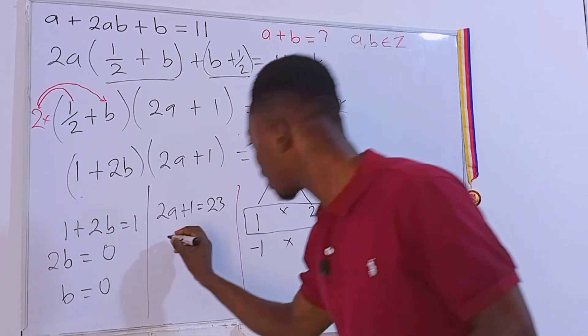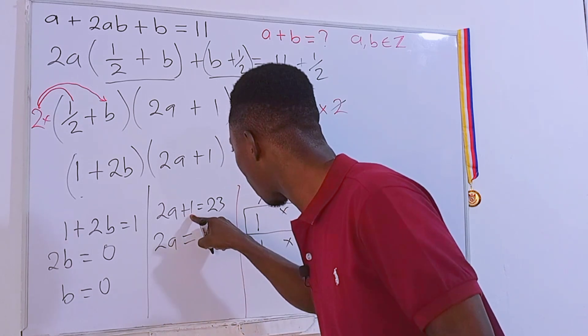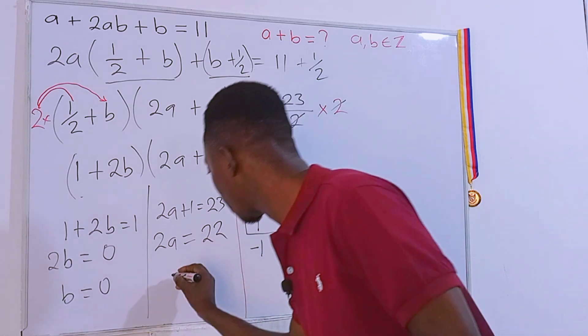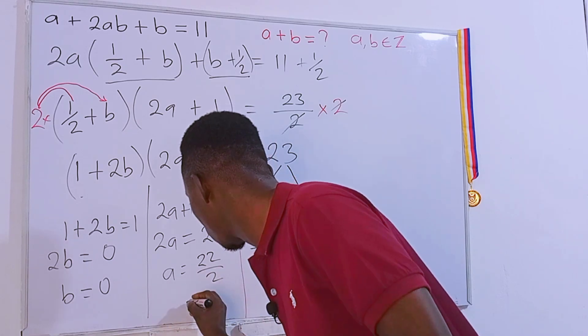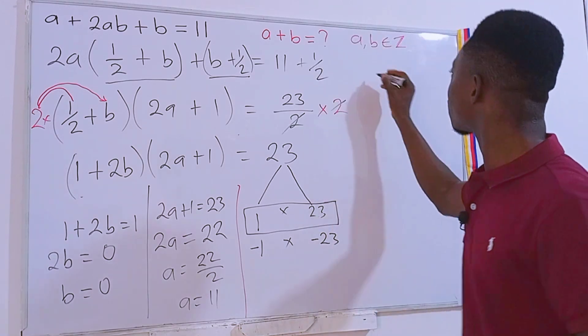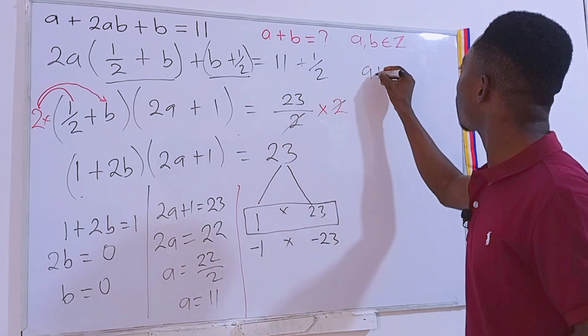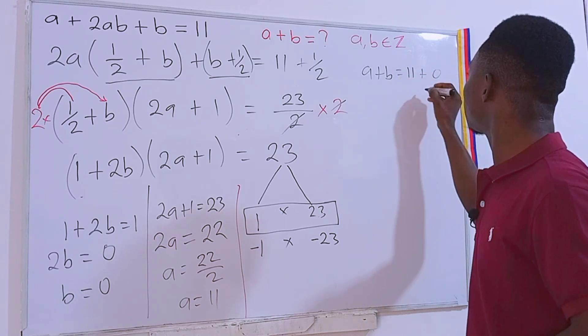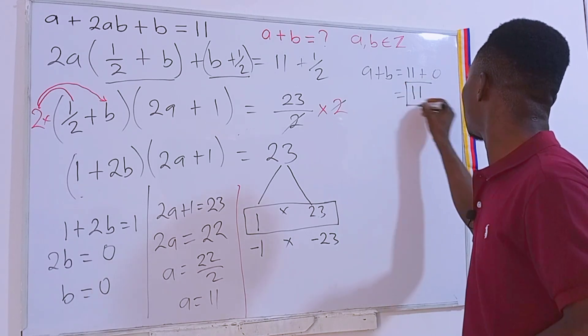Now from here, let's keep 2a on the left. Then on the right, we transpose to get 22 here. Therefore, we have a = 22 divided by 2, which implies that a = 11. And of course, we are looking for a + b. We know a, we know b. So a + b = 11 + 0, which implies that a + b = 11. This is one of the solutions.